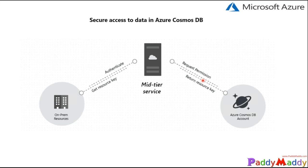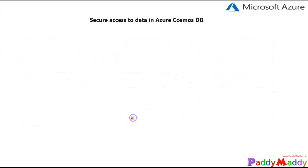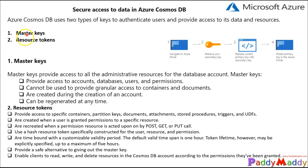What we are really going to see on this exam are specifically master keys and resource tokens — these are the two key concepts to look for. If you understand these two concepts, that will be more than enough to answer Cosmos DB security questions on the exam. I hope this is useful for you — thank you for watching.